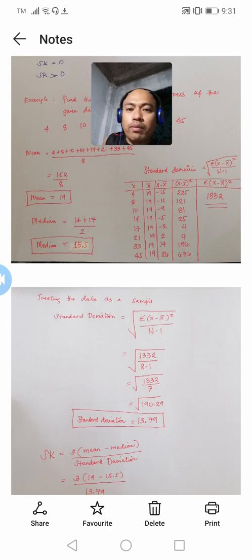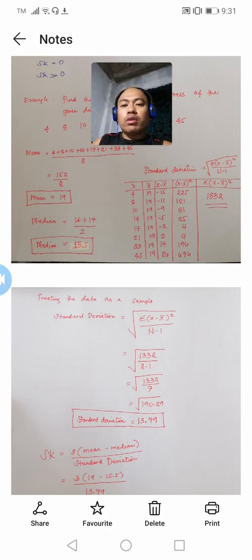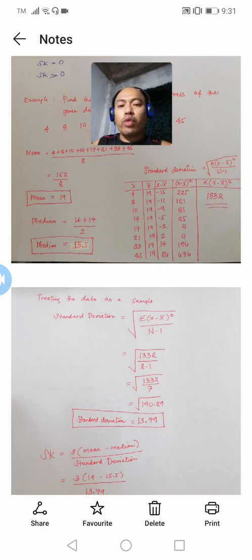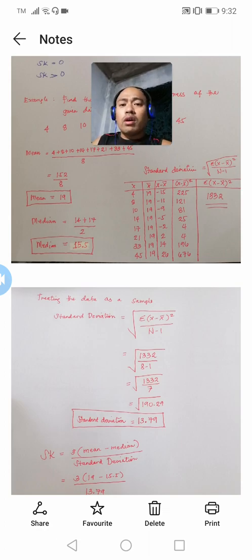To compute the variables needed in the standard deviation formula, we will be using a statistical table. The column headers are: the first column has the x variables — your data or observations; the second column has the value of your mean, since we need it in the formula of the standard deviation. The third column is the difference between the observation x minus the mean x-bar. Then the fourth column is the square of those differences.